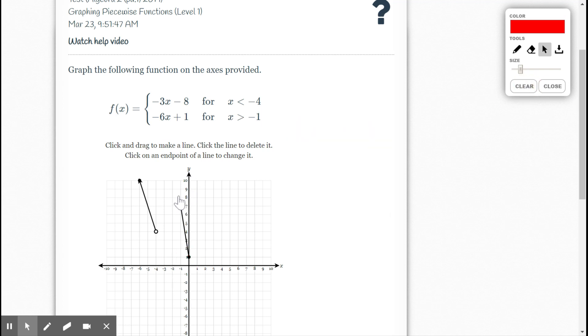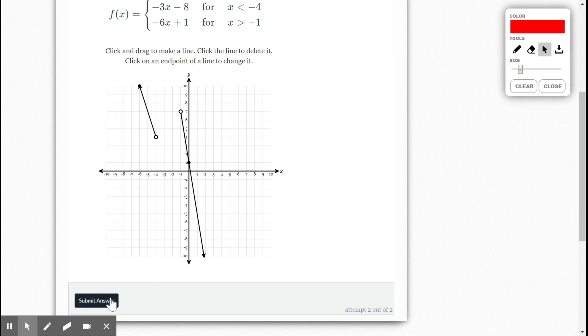And now this function is true for all x values greater than negative 1. So I want to make this an arrow. Double click it. That shows that that continues. And I'm going to make this hollow because of the inequality symbol here. Then I'm going to go ahead and submit it.